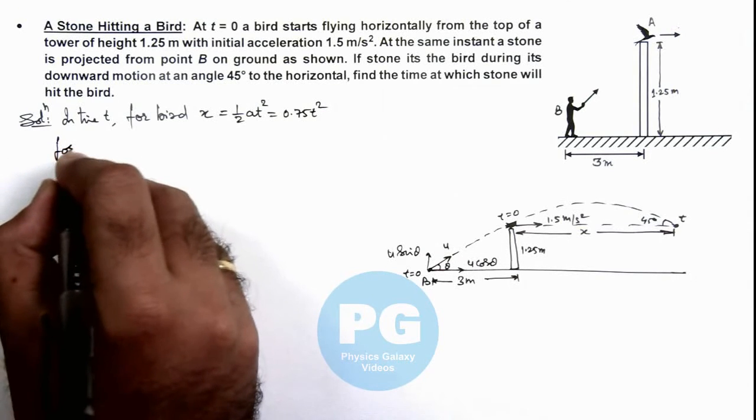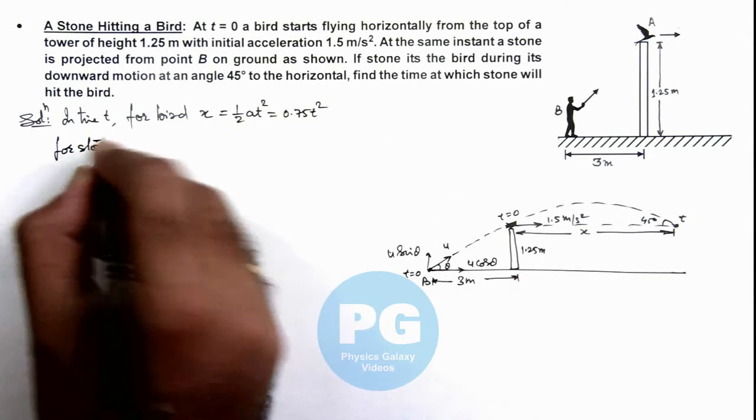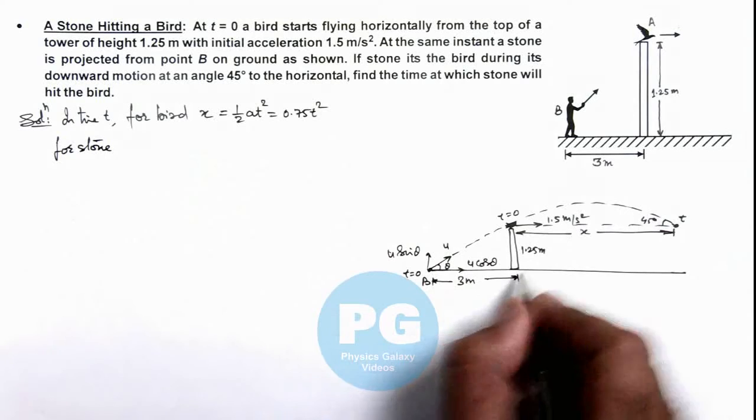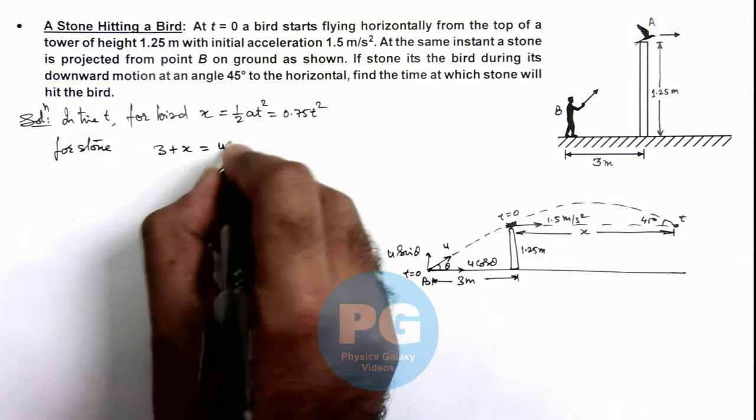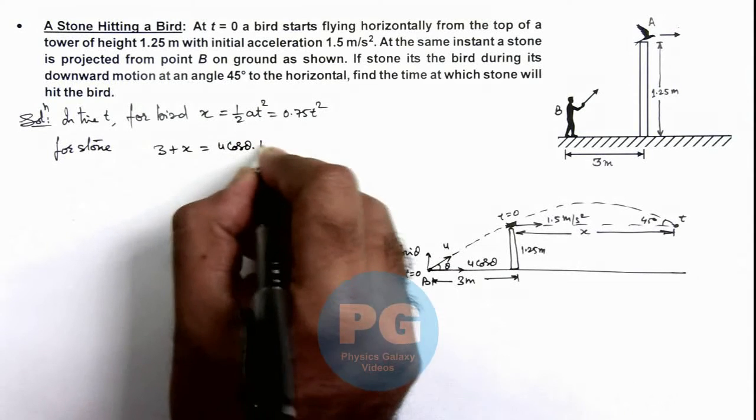For the stone, we can write in the same time it travels a distance 3 plus x, so the value of 3 plus x is u cos theta multiplied by the time t.